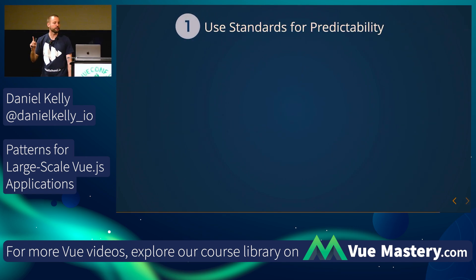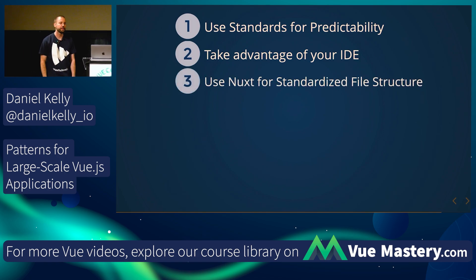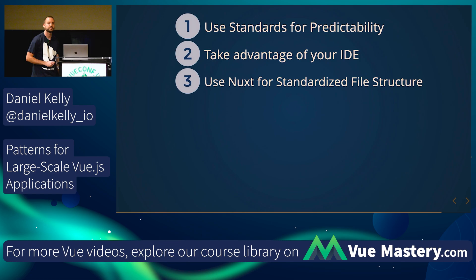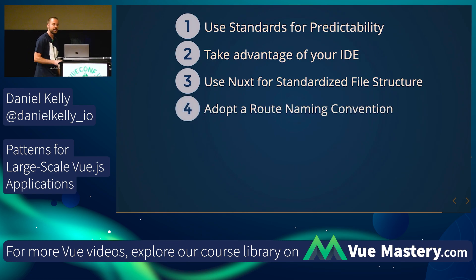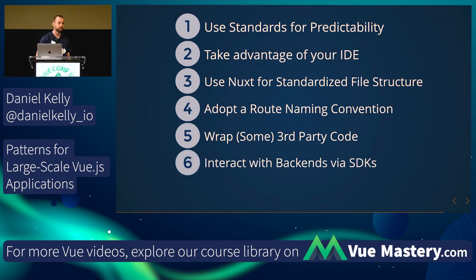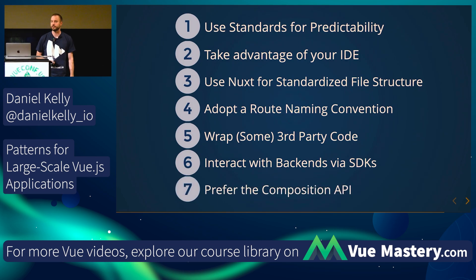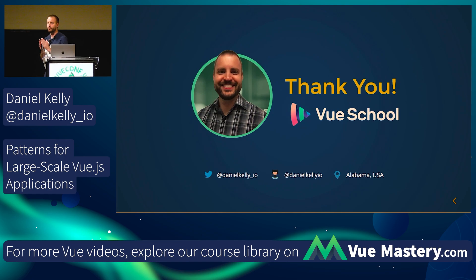In summary: number one, use standards for predictability. Number two, take advantage of your IDE. Number three, use Nuxt for a standardized file structure. Number four, adopt a route naming convention. Number five, wrap some third-party code. Number six, interact with backends via an SDK. And finally, prefer the Composition API over the Options API. I am Daniel Kelly with Vue School — thank you so very much for your time.